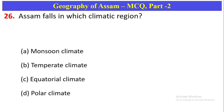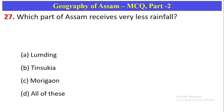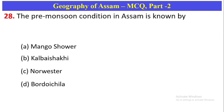First question: Assam falls in which climatic zone? The climatic zone here is monsoon climate, so Option A is the correct answer. Next question: Which part of Assam receives very less rainfall? That area receives very little rainfall. Option A is correct. The pre-monsoon condition in Assam is known as Bordoisila — Option D.